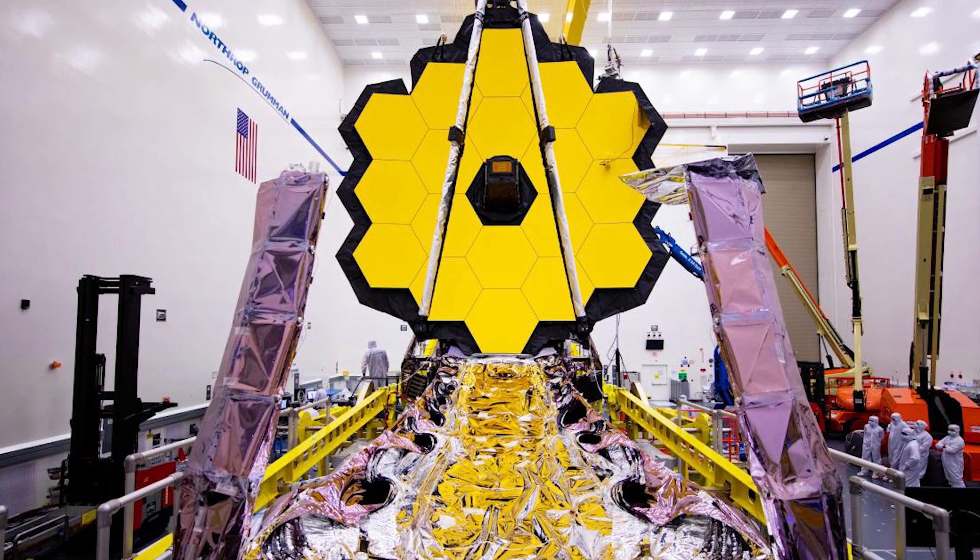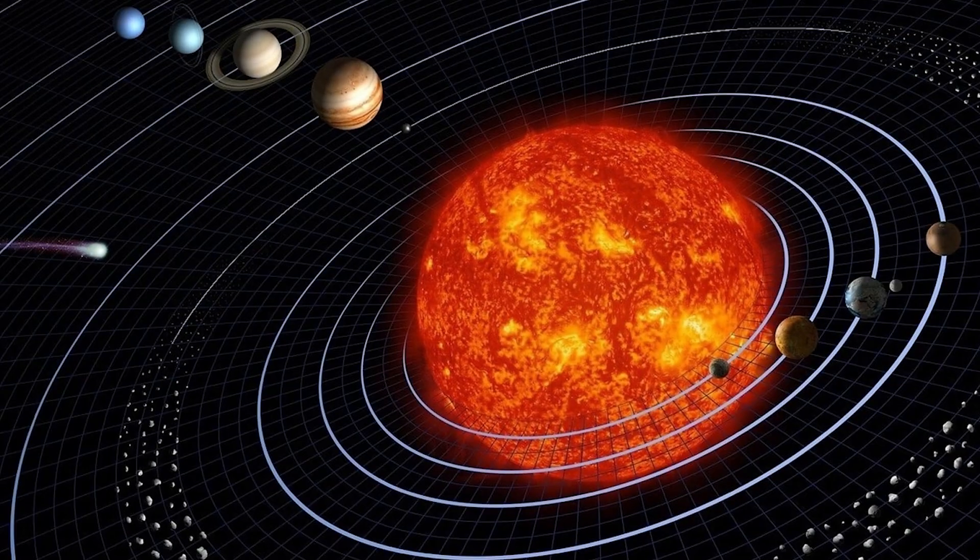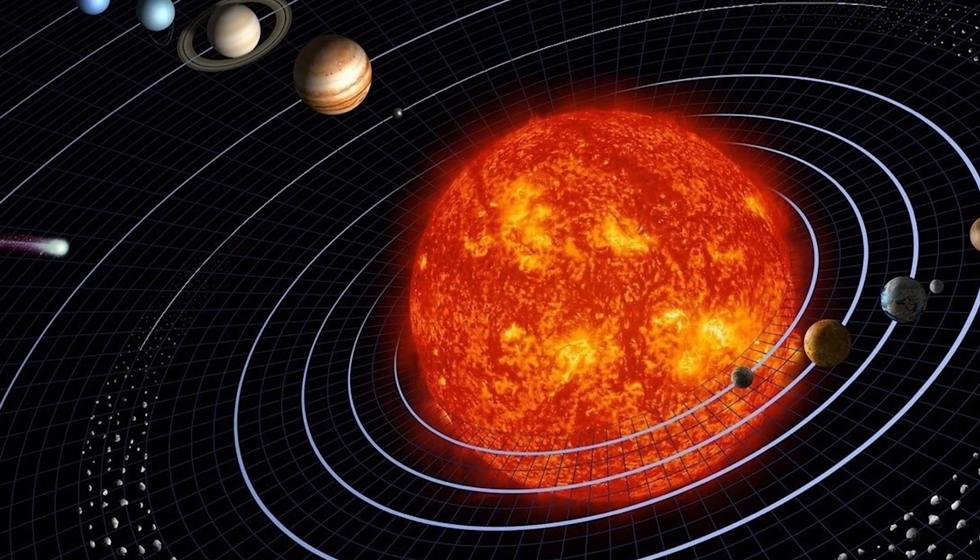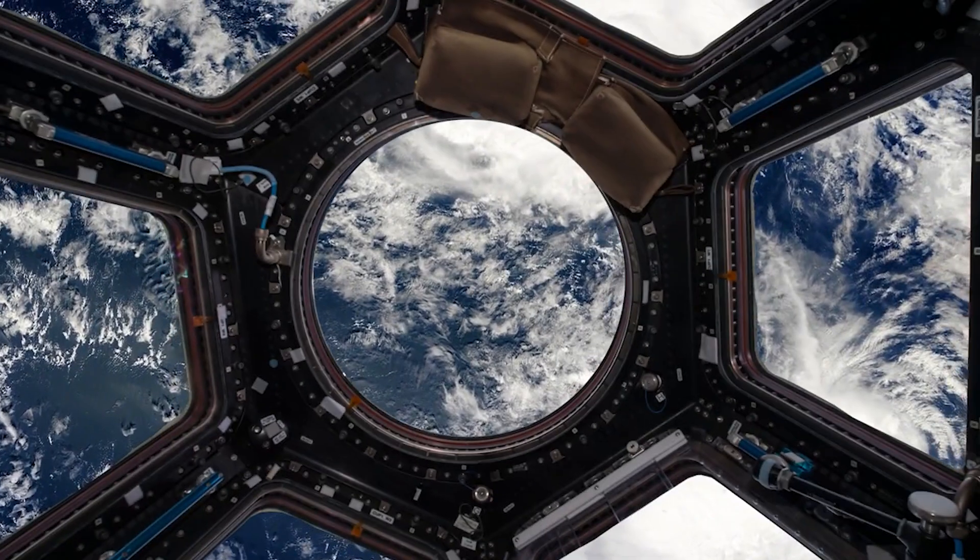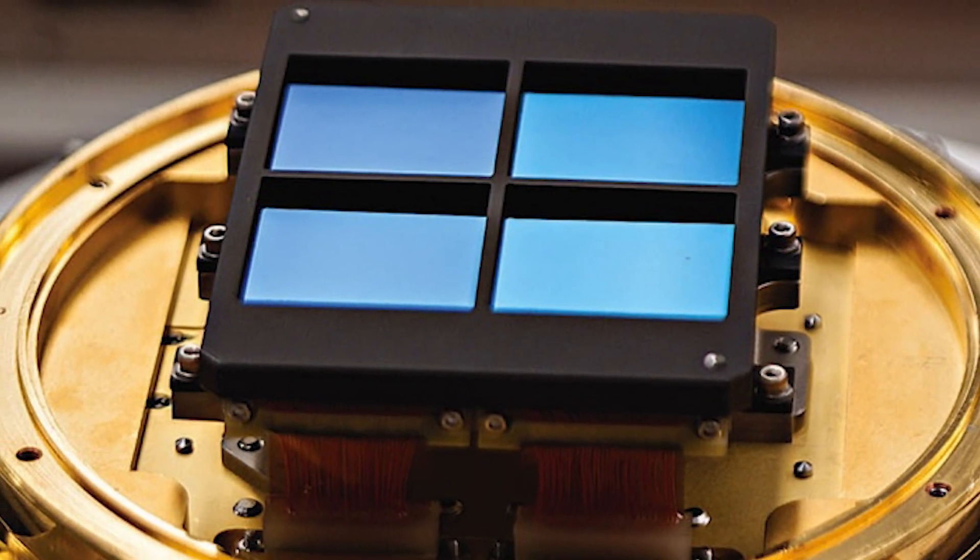Therefore, the James Webb Space Telescope is extremely technologically advanced and an engineering wonder. Unlike previous telescopes, this one orbits the sun instead of the Earth, allowing it to maintain an optimal temperature while delivering a greater view of outer space. The telescope's infrared cameras are of four distinct varieties.